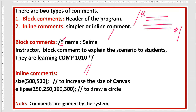When the program runs, the system will ignore the comments — you will only see the result of size and ellipse. Comments are just for the viewers so other people can understand your work. Keep in mind that block comments start with the slash and asterisk symbol and end with asterisk and slash.